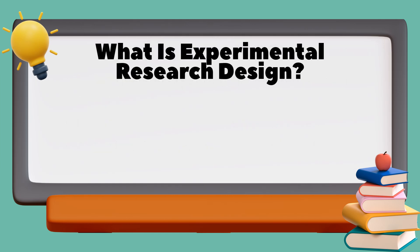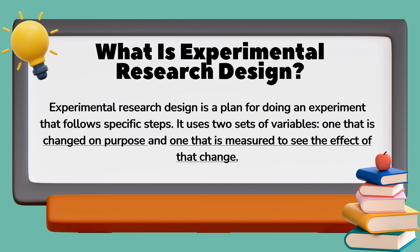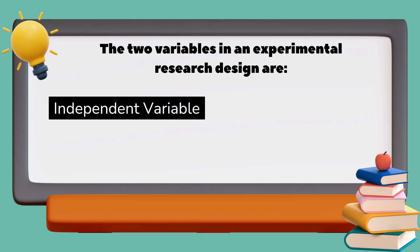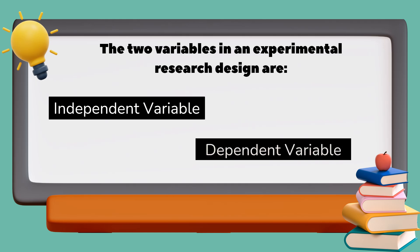So, what is experimental research design? Experimental research design is a plan for doing an experiment that follows specific steps. It uses two sets of variables: one that is changed on purpose and one that is measured to see the effect of that change. These two variables are called the independent variable and the dependent variable.